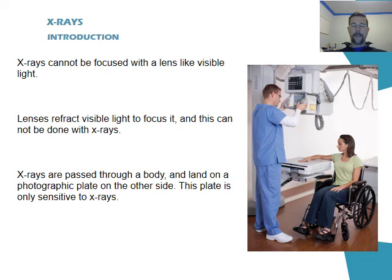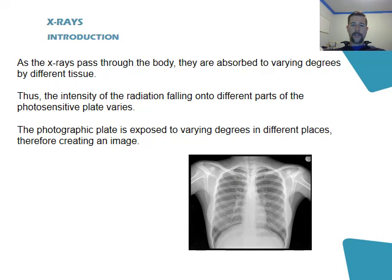X-rays cannot be focused with a lens like visible light because refraction is required to do this and x-rays do not refract with lenses. So what happens is x-rays pass through a body and land on photographic paper or photographic plate on the other side. This plate is only sensitive to x-rays which produce the image. As the x-rays pass through the body, they're absorbed by different body tissue to varying degrees, and the intensity of the radiation that falls onto the photosensitive plate varies because of this and produces an image.